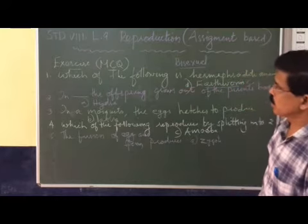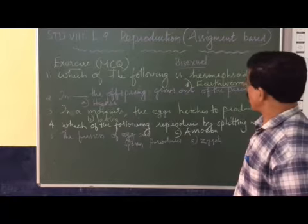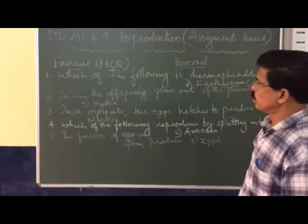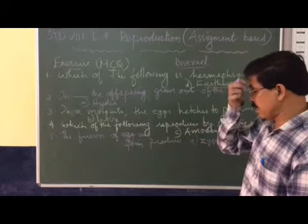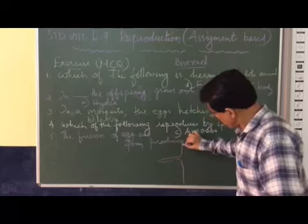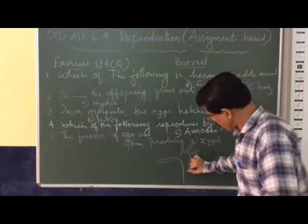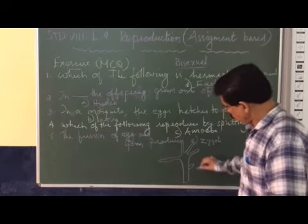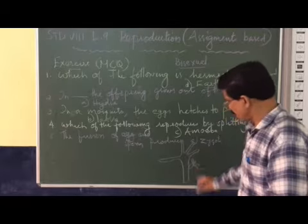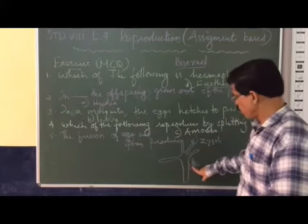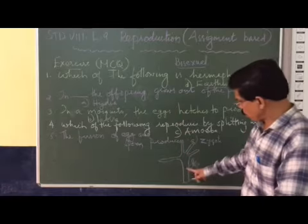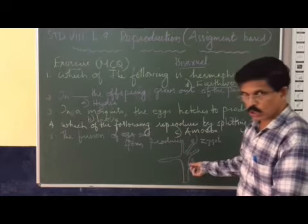Now second question: In dash, the offspring rises out of the parent's body. So options given are yeast, so budding. The answer is hydra. In hydra we know that hydra is a freshwater cnidarian organism. In hydra, budding occurs. So after budding what will happen? The bud will develop into the tiny hydra. So from the parent, a new offspring is formed only in hydra. So the bud develops into the new hydra. Hydra produces buds, a small outgrowth called the buds. This bud will grow into new offspring.